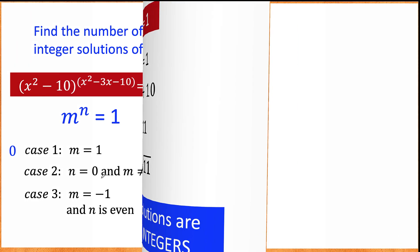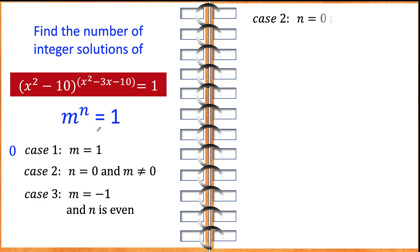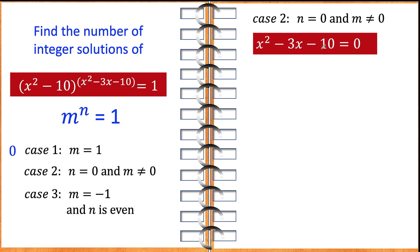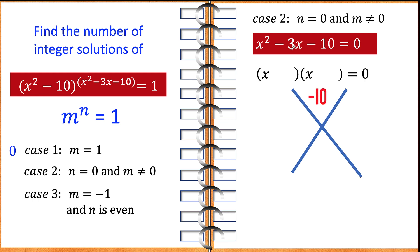Let's go to case number 2, when the exponent is 0 and the base is not 0. Our exponent is x squared minus 3x minus 10, and we set that equal to 0. This is a quadratic equation that can be solved using factoring. The factors of negative 10 that add to negative 3 — the possible factor pairs of 10 are 1 times 10 and 2 times 5. Since the product is negative, one factor must be negative and the other positive, and the coefficient of the middle term is negative 3.